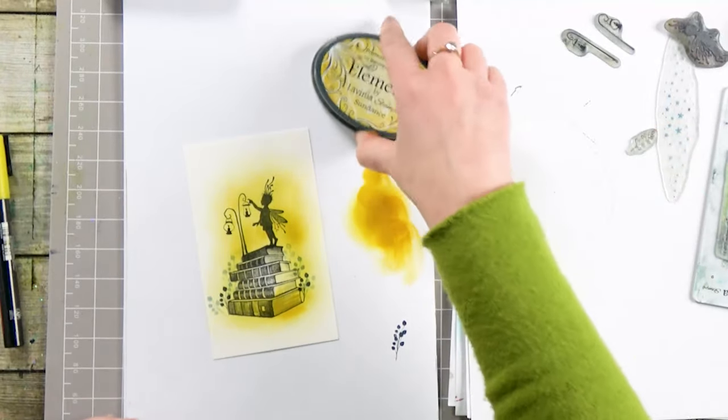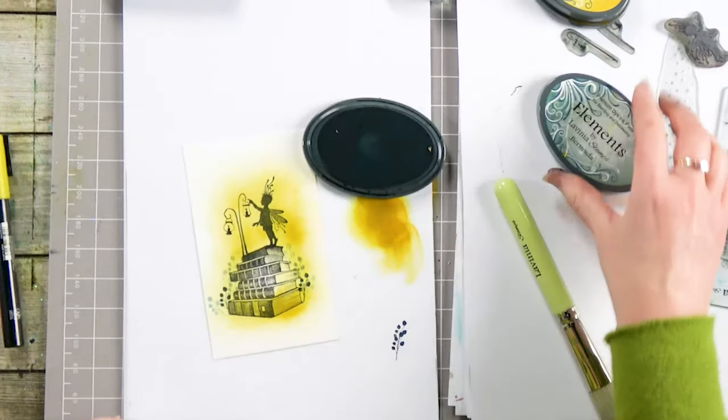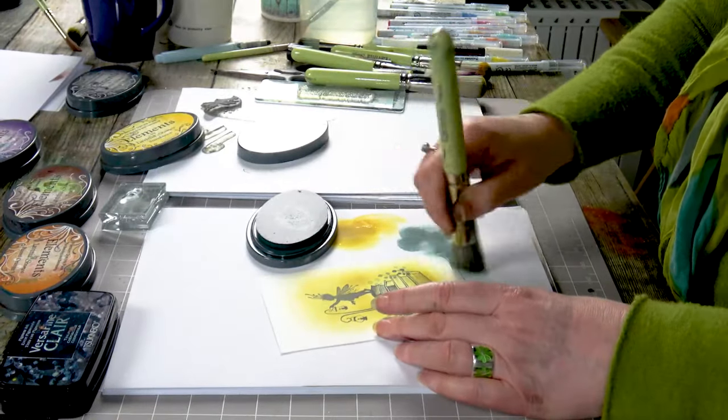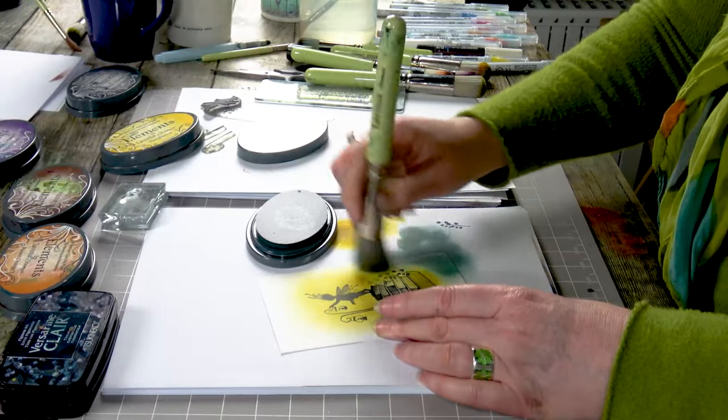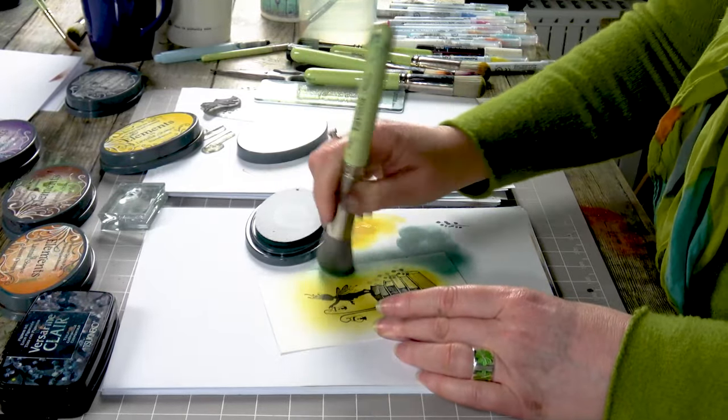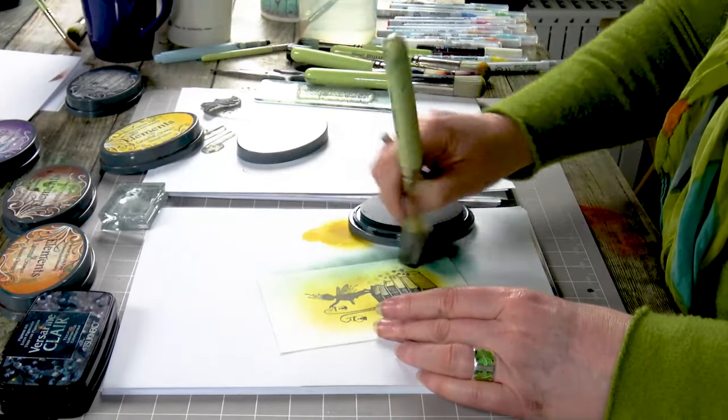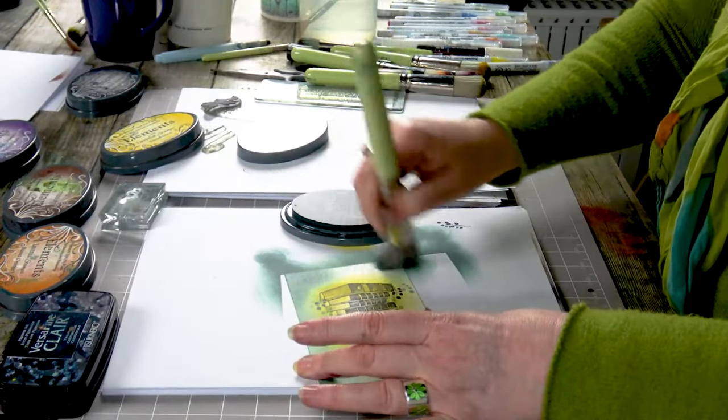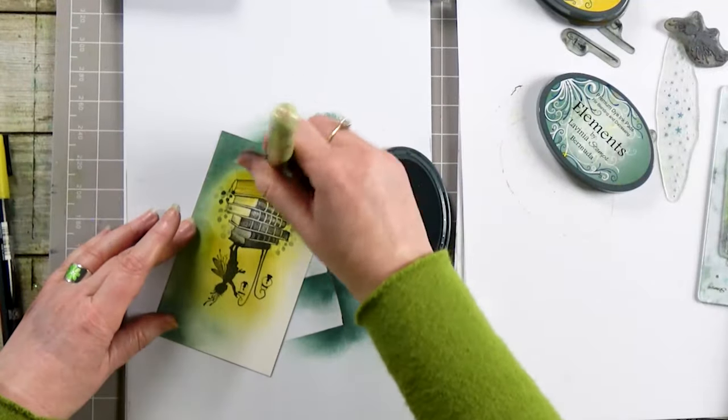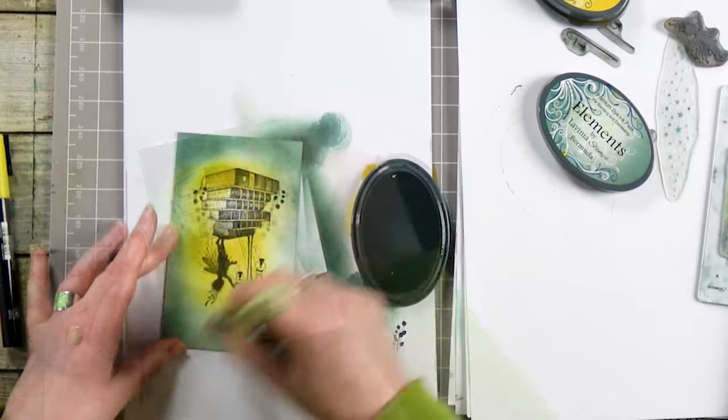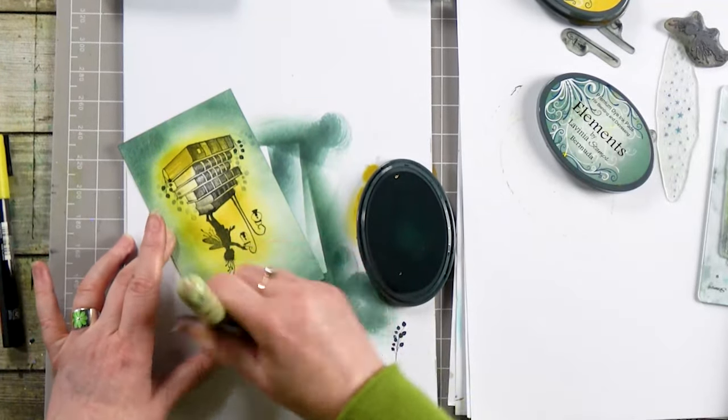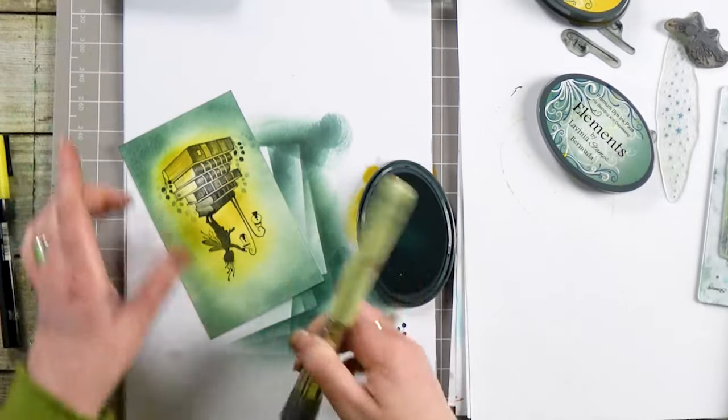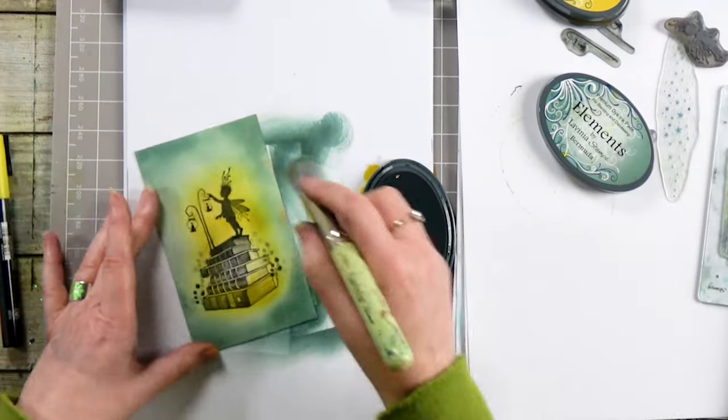And now I'm going to bring in the Bermuda, which is another really lovely color. So just keep on swirling your brush over, around and around, and the colors will meet and start blending really nicely together and you've still got that lovely yellow in the center.